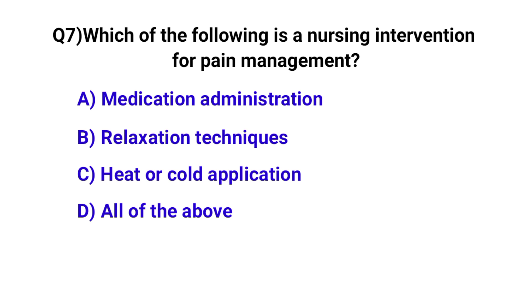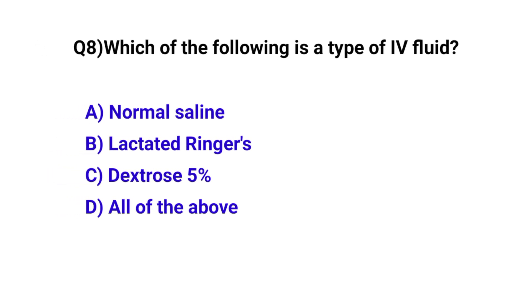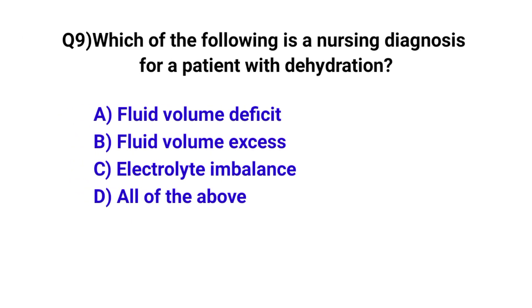Question number seven: which of the following is a nursing intervention for pain management? The correct option is D, all of the above. Question number eight: which of the following is a type of IV fluid? The correct option is D, all of the above. Question number nine: which of the following is a nursing diagnosis for a patient with dehydration? The correct option is A, fluid volume deficit.